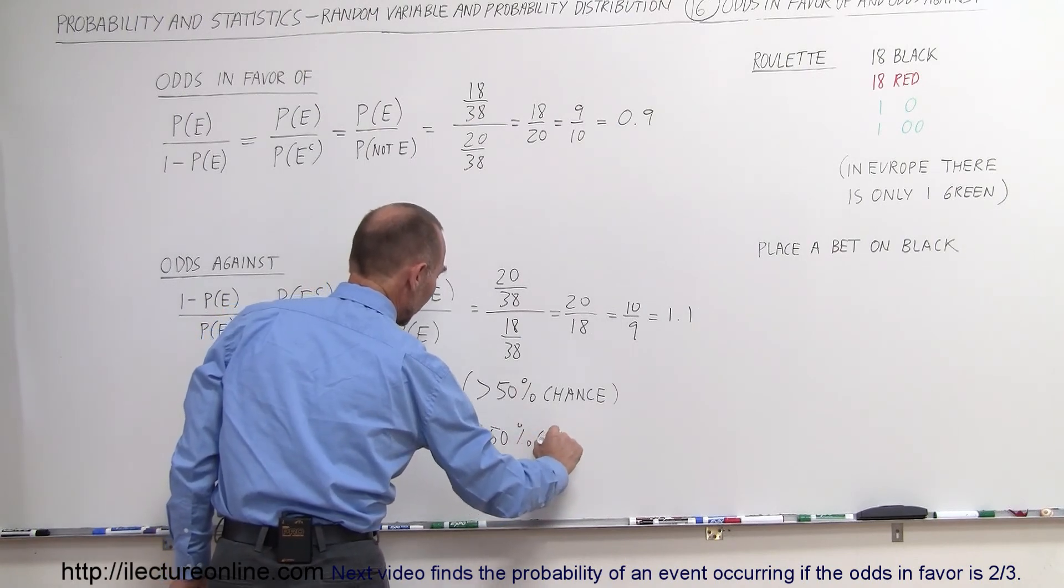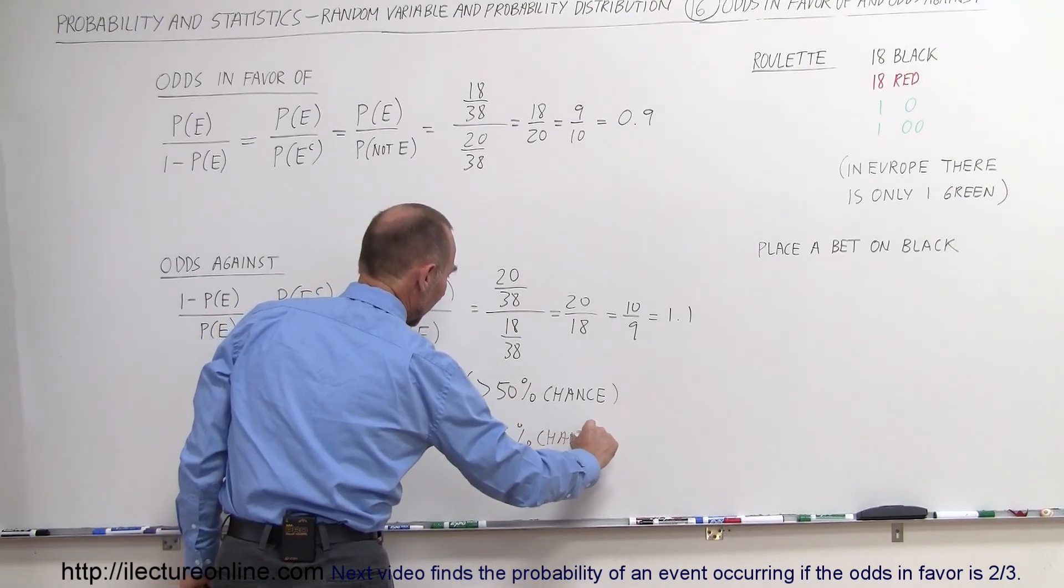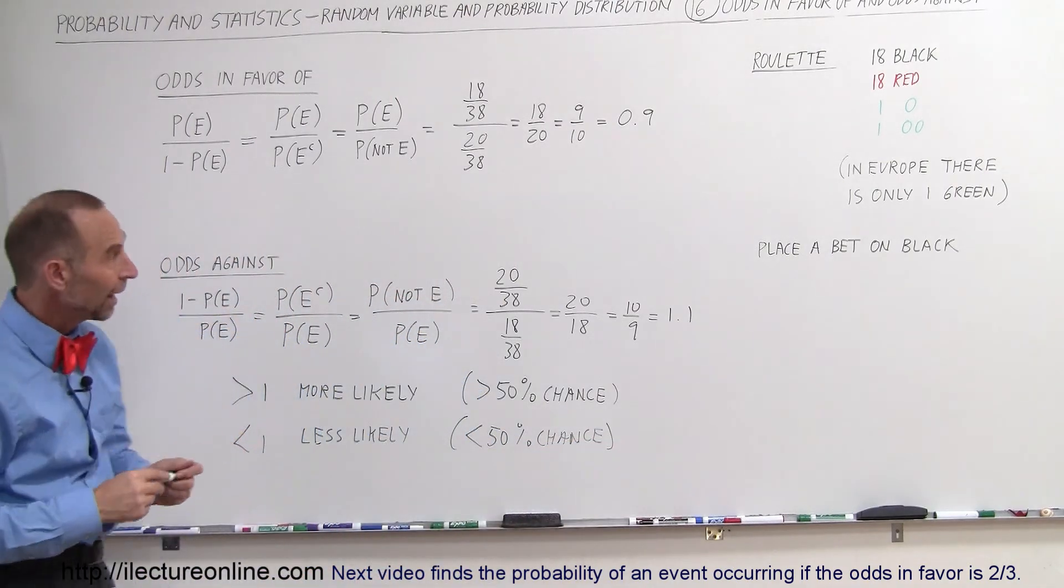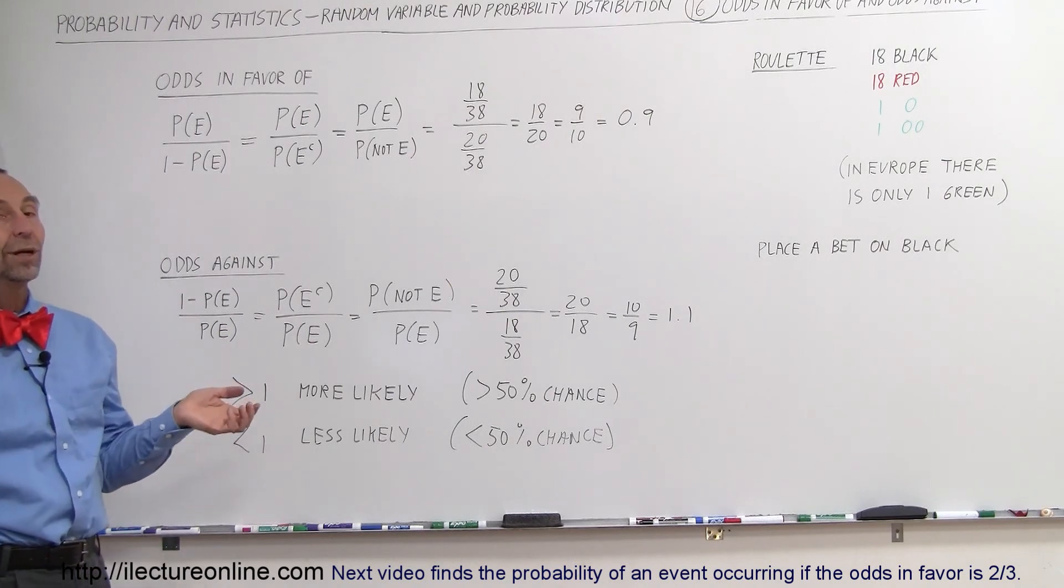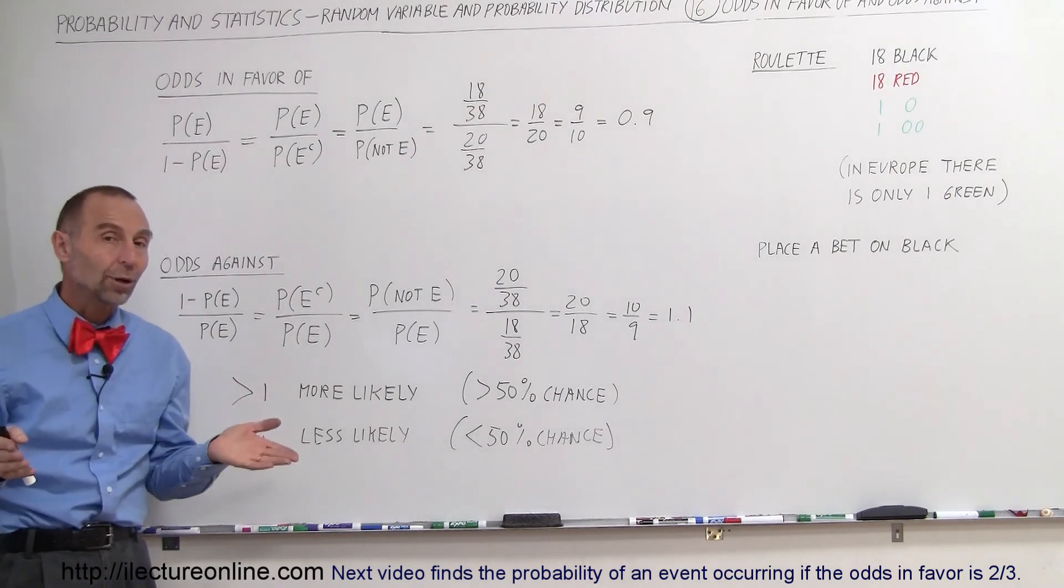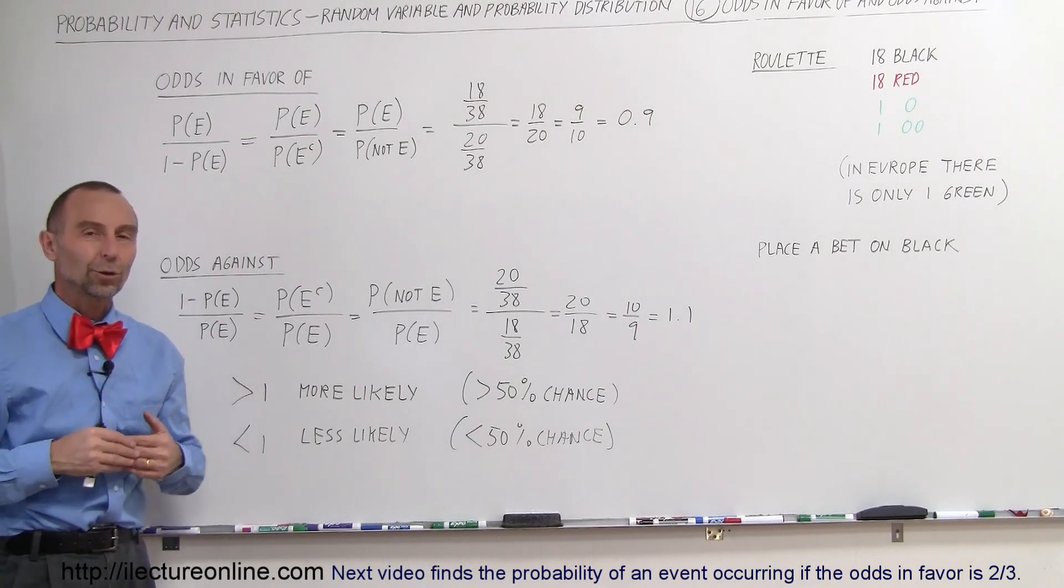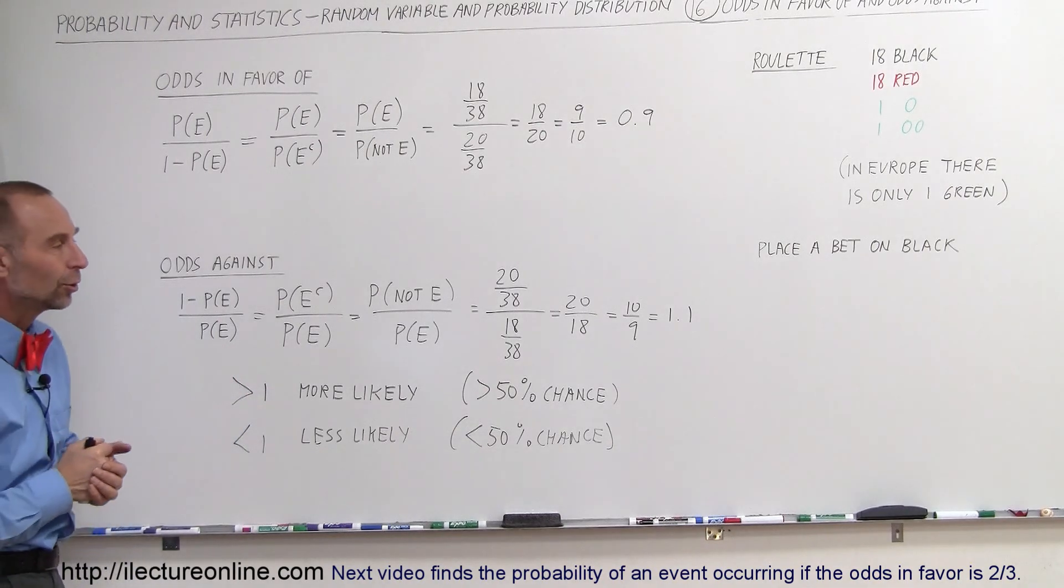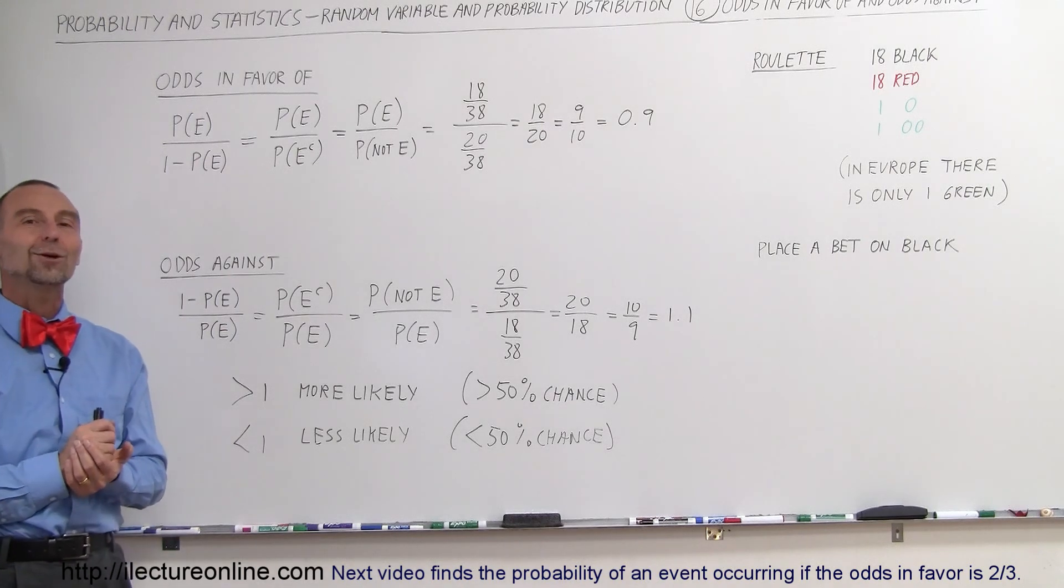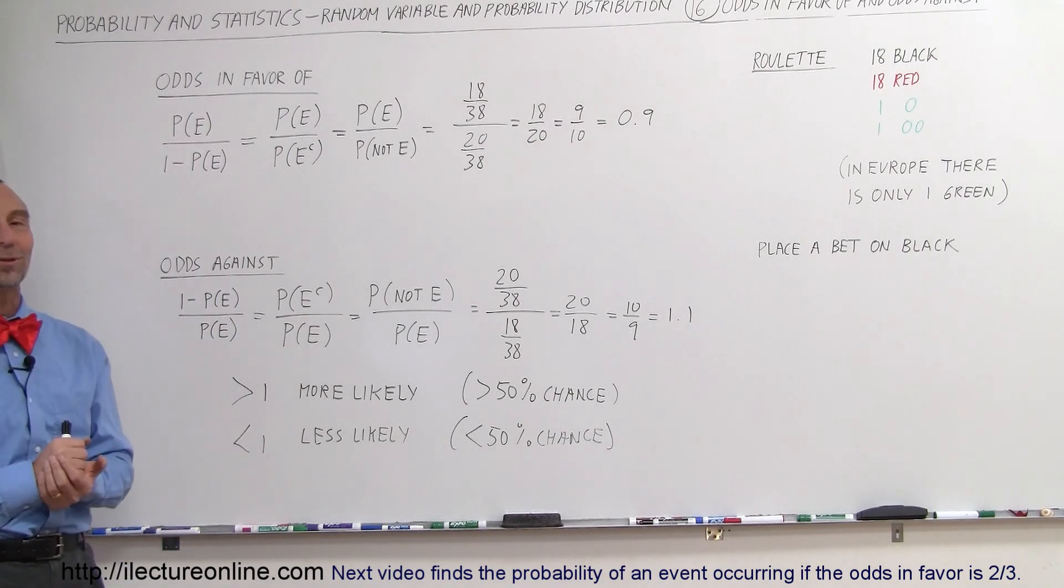So that's the best way to interpret odds in favor of and odds against. If the odds against are more than one, you're more likely to lose. If the odds in favor of are more than one, you're likely to win, or more likely to win than you are to lose. And that's how we interpret your odds at the roulette wheel and that's how we do that.